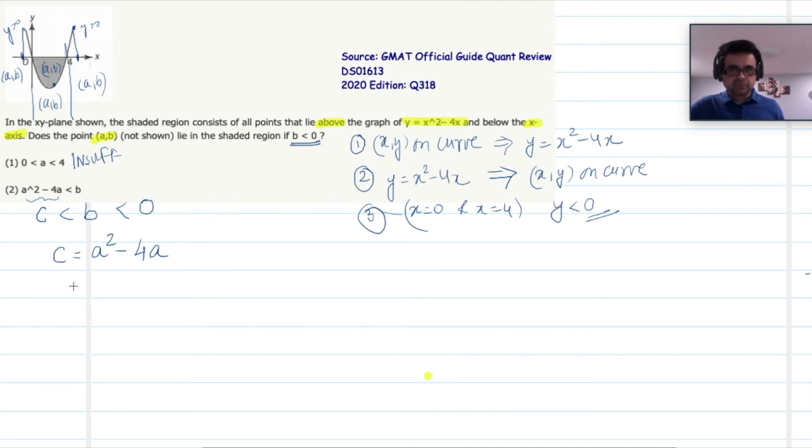Now let us express c again because I considered this a squared minus 4a as c. So if there was a point (a,c), a comma c, where a is the x coordinate and c is the y coordinate. Since c satisfies the a squared minus 4a, which is the equation of the curve, point (a,c) must lie on the curve. Is that clear? So now let us draw it out.